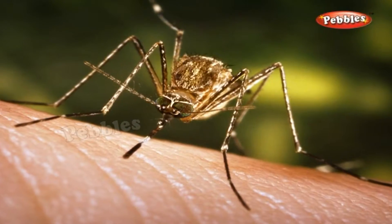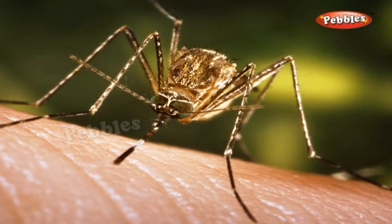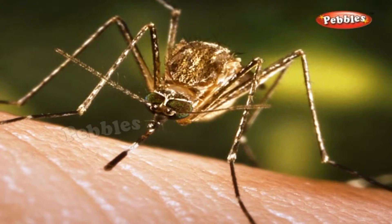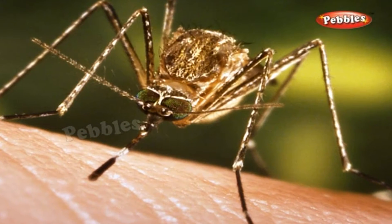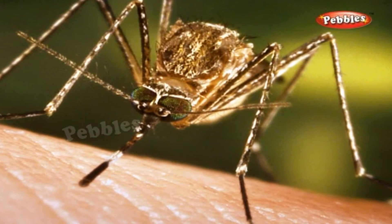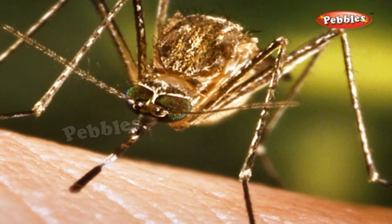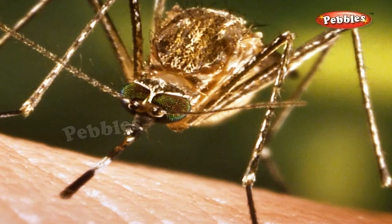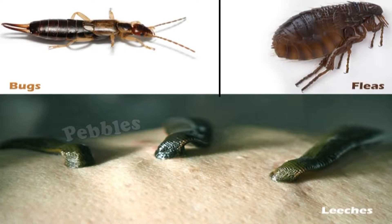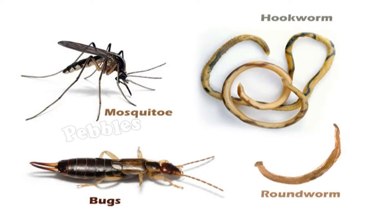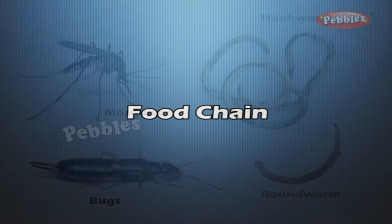Parasites. Parasites are small animals that depend on other living animals for their food. Mosquitoes live on blood that they suck from humans and other animals. They have a long, sharp pipe instead of teeth, which is used to pierce the skin and suck the blood. Fleas, leeches, and bugs are also parasites. Some parasites such as tapeworm, roundworm, and hookworm live inside the bodies of animals and eat the food after it has been digested by the animals.